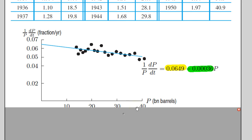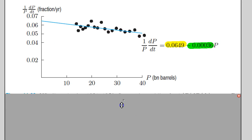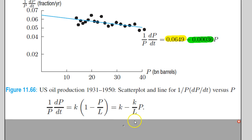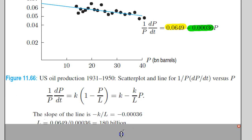If you recall from our logistic model expression, this slope is the same as k over L. So if I know what k is and I know what the slope is, I can solve for L. I can figure out that the limiting value L is 180 billion, which basically means he predicted that the highest production of oil for a year will be 180 billion.